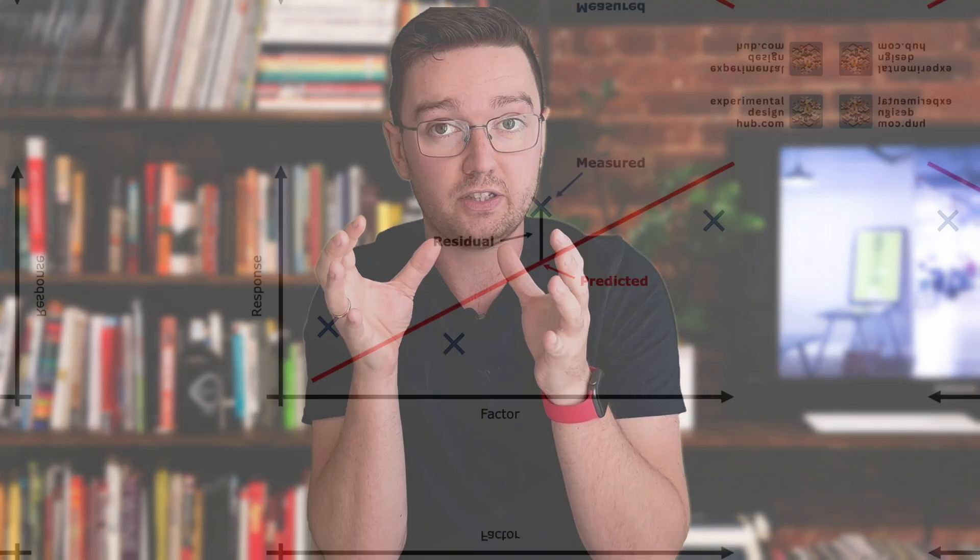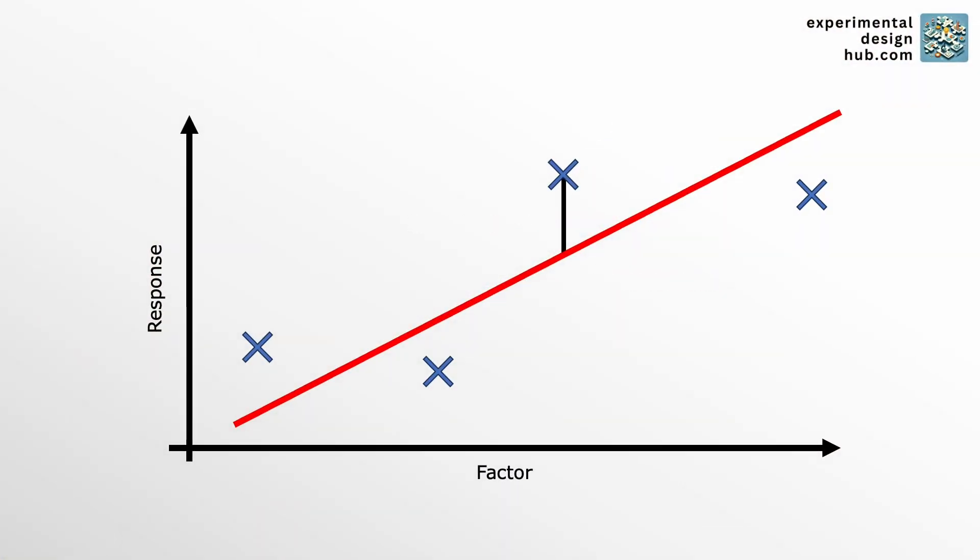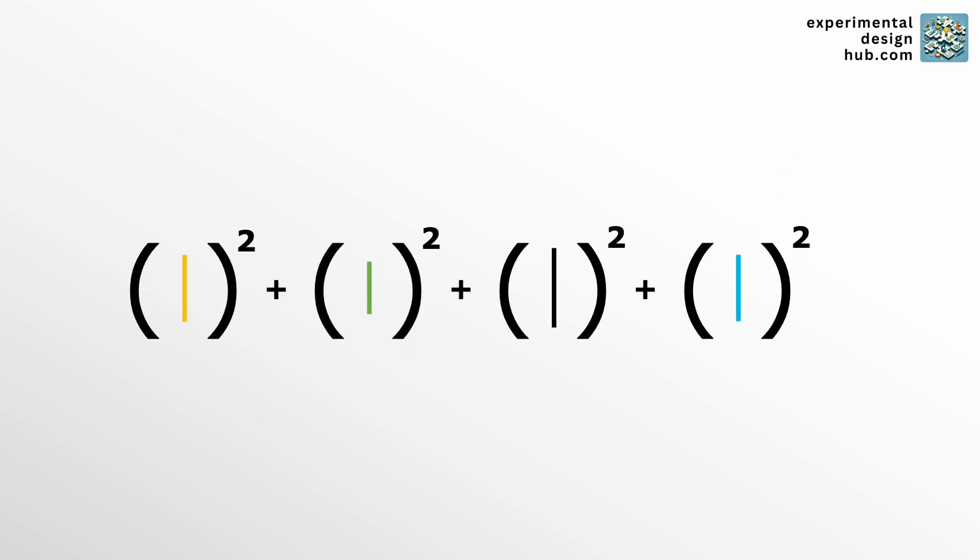If you're looking for one single number to compare different models or to get a feel for how good your model actually is, you can use the RSS or the residual sum of squares value. Basically, RSS adds up all the squared residuals. Why squared? Well, we don't want the positive and negative errors to cancel each other out, so squaring them ensures we account for all the deviations. The smaller the RSS, the better your model.